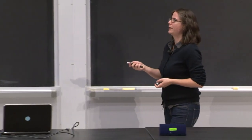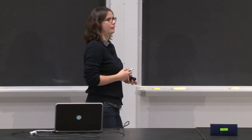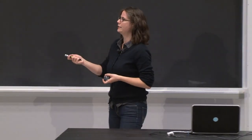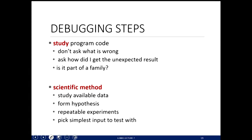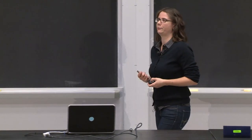The general debugging steps: study the program code. Don't ask what is wrong — that's part of testing. The debugging process is figuring out how the result took place. Since debugging is a science, you can use the scientific method: look at all the data — that's your test cases — figure out a hypothesis (for example, maybe you're indexing from one instead of zero in lists), come up with an experiment you can repeat, and pick a simple test case to test your hypothesis.